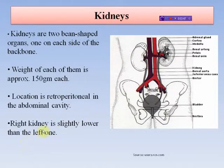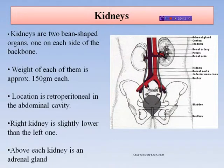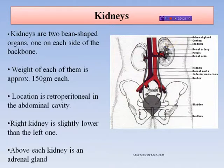The right kidney is slightly lower than the left one. This is because the liver is present on the right side, which makes the right kidney slightly lower. Above each kidney is an adrenal gland, also called the suprarenal gland, because it is situated above the kidneys.